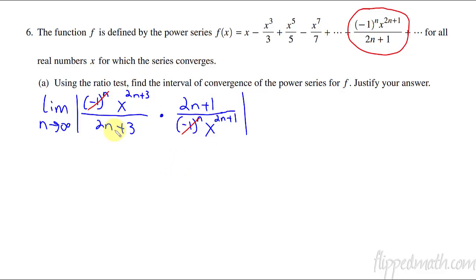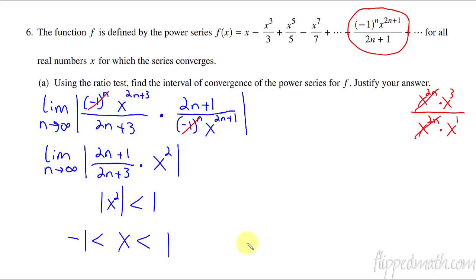Now you could see here, because it's absolute value, the negative 1 to the something power is just going to go away. Or you could think of this as they cancel, top and bottom here. And then what else can cancel? Well, the 2n plus 1 and the 2n plus 3, those are definitely not going to cancel. But I do have some things here in the x's that cancel. And all you're going to be left with is an x squared.